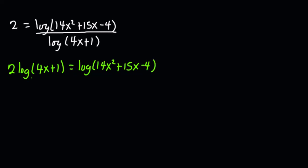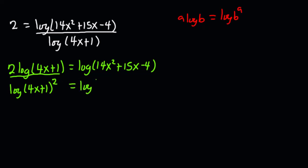Now generally, according to the log property, if we have a·log base 10 of b, this is the same as log base 10 of b to the exponent a. Applying that property here, what we have is log base 10 of (4x + 1)² equals log of (14x² + 15x − 4).